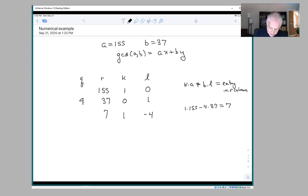Now you repeat this algorithm. 37 divided by 7, 7 goes in 5 times. 37 minus 5 times 7 is 2. That's the remainder. 0 minus 5 times 1 is minus 5.